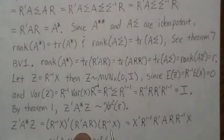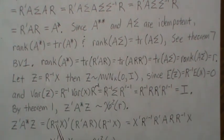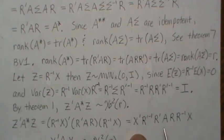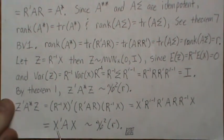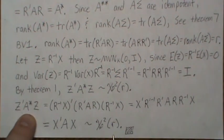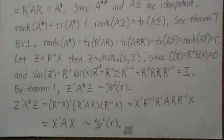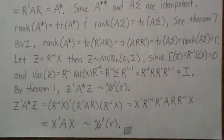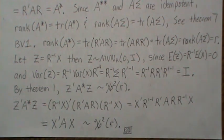Now expanding Z'A*Z: substituting Z = R⁻¹X and A* = R'AR, and distributing the transpose, we get (R⁻¹X)'(R'AR)(R⁻¹X). Simplifying, R^{-T}·R' = I and R·R⁻¹ = I, so this reduces to X'AX. We just showed that equals chi-squared with R degrees of freedom — and that's what we set out to prove. That's all for this video. We'll keep going with distributions of quadratic forms in the next two or three videos. If you liked it, subscribe and see you next video.